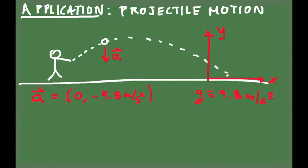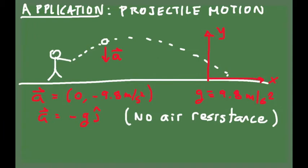Since in projectile motion we use this number constantly, we prefer to give it a letter so we don't have to write 9.8 all the time. We call g a shortcut for 9.8 meters per second squared. The acceleration of an object due to gravity alone is minus g downwards, and in vector notation we write it as a = −g ĵ.